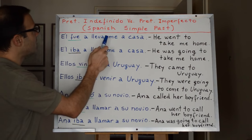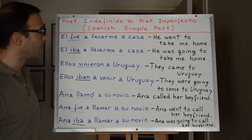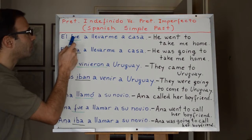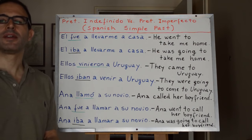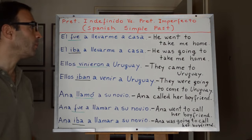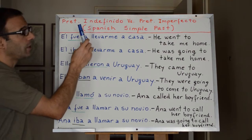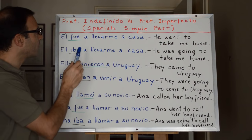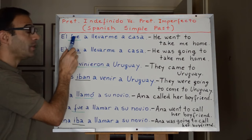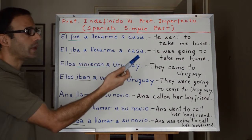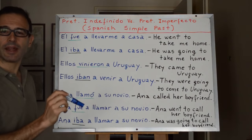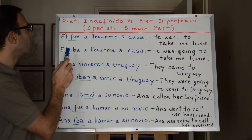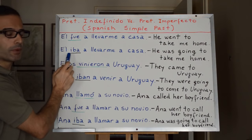Él fue a llevarme a casa means he went to take me home. I want you to see the difference in meaning when we use pretérito indefinido or pretérito imperfecto. With pretérito indefinido: él fue a llevarme a casa — he went to take me home. Now look at the change in meaning if we use pretérito imperfecto.